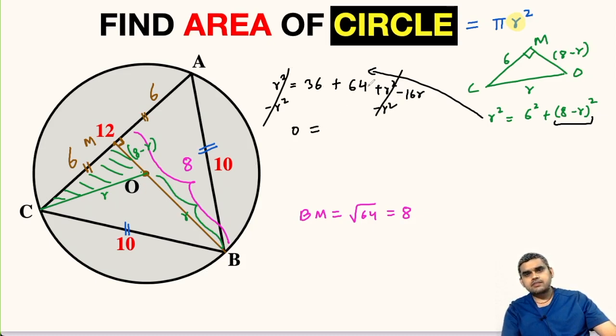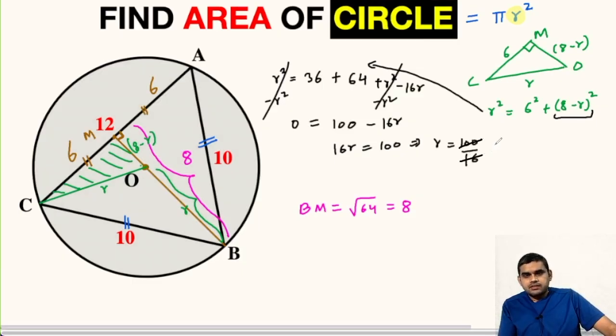So 16r = 100, which implies r = 100/16. We can further simplify this. Let us divide numerator and denominator by 4. So this will become 25/4, which will be 6.25. Now we have found the radius of this circle.